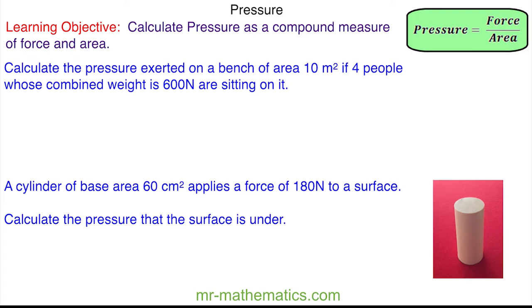In our first question, we are asked to calculate the pressure exerted on a bench of area 10 m² if 4 people whose combined weight is 600 N are sitting on it. So the pressure, using our formula, is equal to the force which is given as 600 N divided by the area which is given as 10 m².